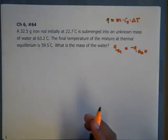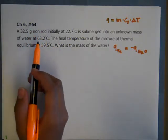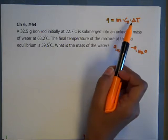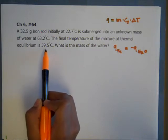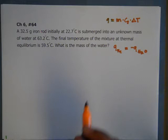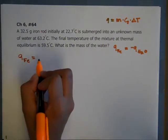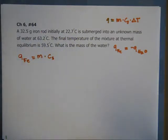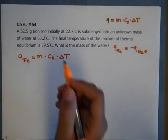So the first thing we're going to solve is what the information we have. So we know that the iron rod, we have M, we have C, we can look that up in a table, and we have delta T, which is going to be, both of them have a final temperature of 59.5. So Q of the iron rod is going to be mass of the iron rod times the specific heat of iron times the delta T of their temperature change.